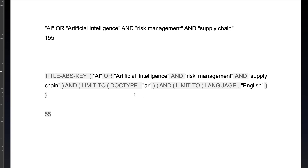All these established databases — like Scopus, Web of Science, PubMed, IEEE — they all follow similar methods. We use keywords for data extraction. For this illustration, I'm using artificial intelligence and risk management in supply chain as a test case. Using AI or artificial intelligence, risk management, and supply chain as keywords, I received 155 research articles.